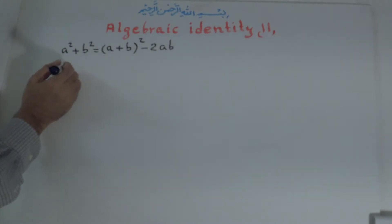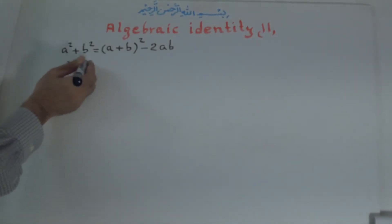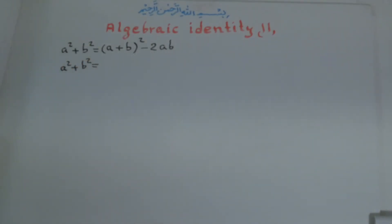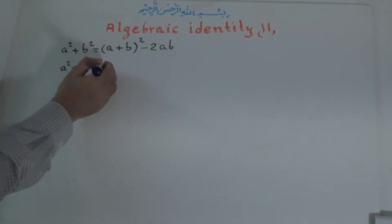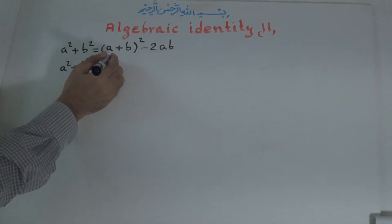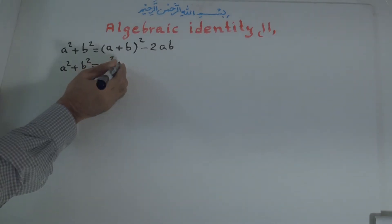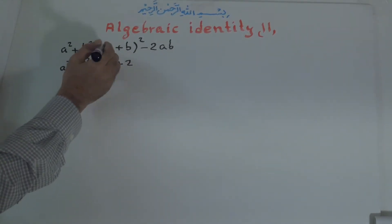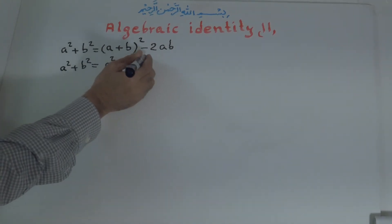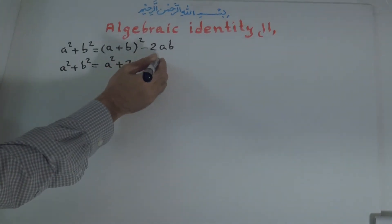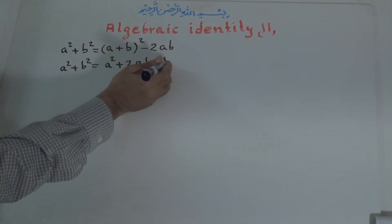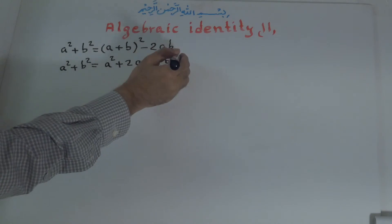We prove this: a to the power of 2 plus b to the power of 2 is equal to — if we simplify a plus b to the power of 2, according to identity number 1 — a to the power of 2, plus 2ab (2 times first term and second term), plus b to the power of 2, and minus 2ab.